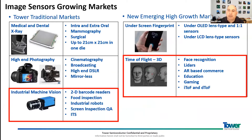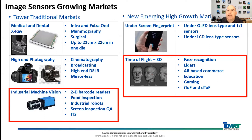On image sensors specifically, we are focusing on specific areas: medical and dental x-ray sensors, which are very large sensors for different medical, dental, and non-destructive imaging applications. This could also be for sports, high-end photography, which covers cinematography, broadcasting, DSLR cameras, industrial machine vision cameras, and fingerprint sensors for cell phones, and time of flight for 3D mapping applications.